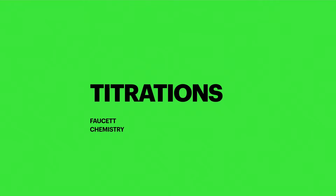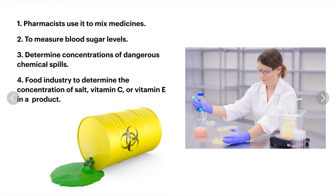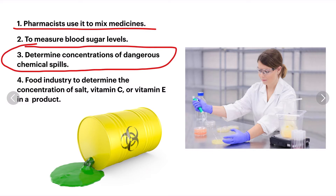Today we're going to be talking about titrations. Titrations are a super important topic — unfortunately because of COVID-19 we're not going to get to actually do this lab. Titrations are simply a way to determine the concentration of some substance dissolved into water or another substance. This is very important when mixing chemicals, figuring out how much of a chemical is in cough medicine, for the FDA to test medicines for accuracy, to measure blood sugar levels, and to determine the concentration of an acid in a chemical spill. The food industry also uses titrations to determine concentrations of substances in foods and vitamins.